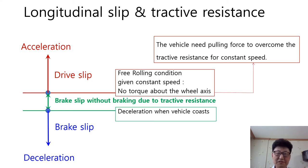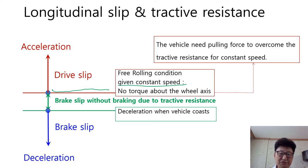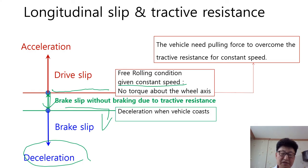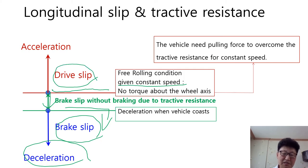The concept of longitudinal slip can be expressed in this picture over various conditions. The horizontal red line represents the given constant speed of free rolling condition with a small pulling force to overcome rolling resistance. Without pulling force, the vehicle naturally decelerates due to rolling resistance without braking force — in other words, the vehicle coasts and slows down. If we apply brake torque during coasting, brake slip is produced in the deceleration region. Brake slip happens with brake torque, and drive slip happens with drive torque in the acceleration region.